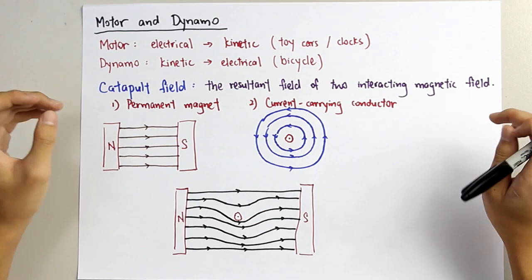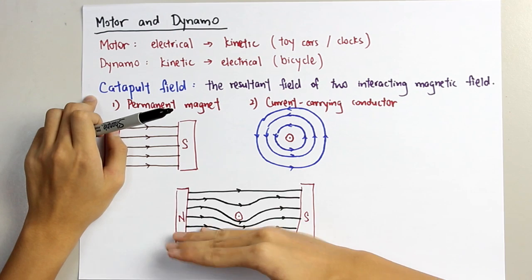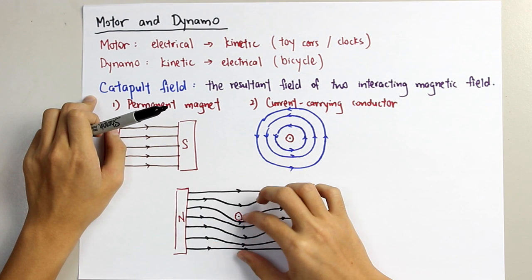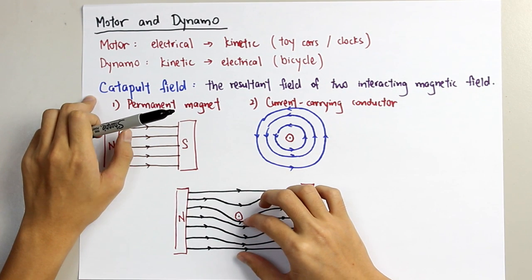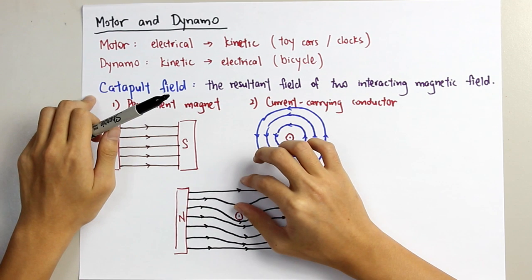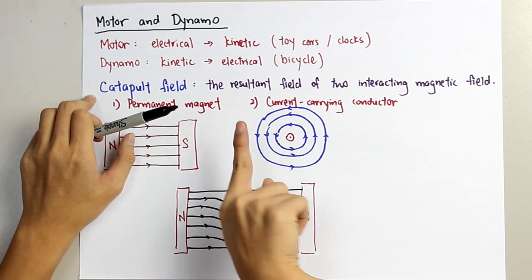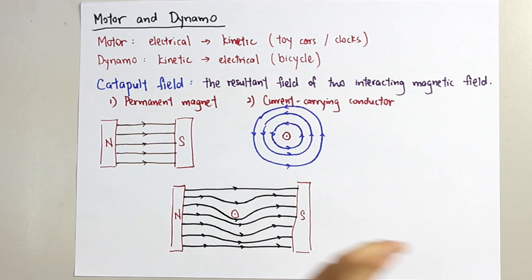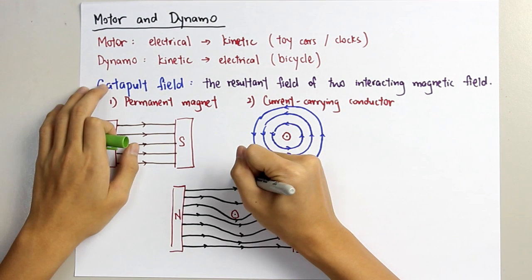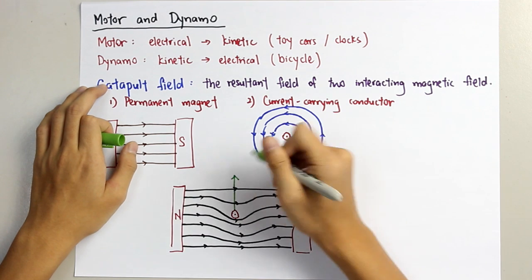You can see that more magnetic field lines are concentrated at this position, and fewer magnetic field lines are concentrated at this other position. So when this area has more field lines and this section has fewer, it will cause a resultant force upwards, and the motion of the wire will be moving upwards.